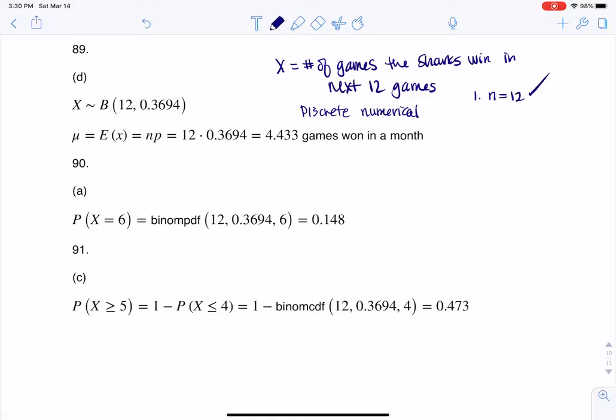So if I look, I did have a fixed number of trials. I'm going to keep track of the Sharks for the 12 games. I'm going to call a success winning a game. And then I'm going to assume that the trials are independent. And they're telling me historically their probability of success is that they win about 37% of the time. They gave me this number, 0.3694.